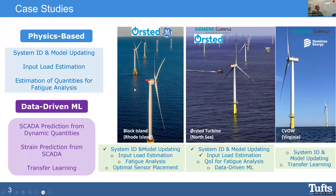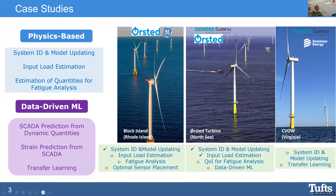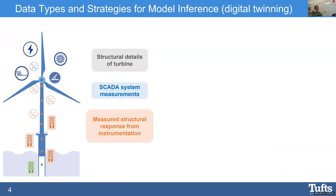The case studies I'll show are the turbines of the first two offshore wind farms in the US: the first one was Block Island in Rhode Island, the second was the Coastal Virginia Offshore Wind (CVOW) farm. We also monitor a farm in Europe in the North Sea. We do physics-based modeling, data-driven modeling, and hybrid approaches. For monitoring, we mostly do digital twinning and model updating, then infer the dynamic performance of these structural systems.